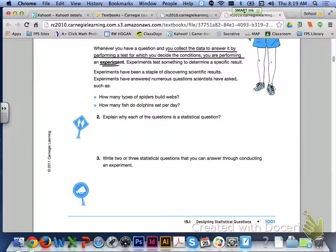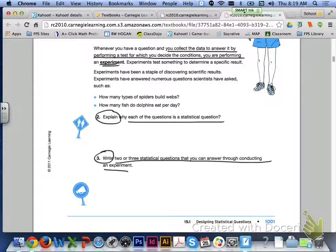So if we take a look at number two and number three, based off of those questions, explain why each of these questions is a stat question and then write two or three stat questions that you can answer through conducting an experiment. And this can be any kind of topic that you want to choose. So write two or three stat questions that you can answer through conducting an experiment.